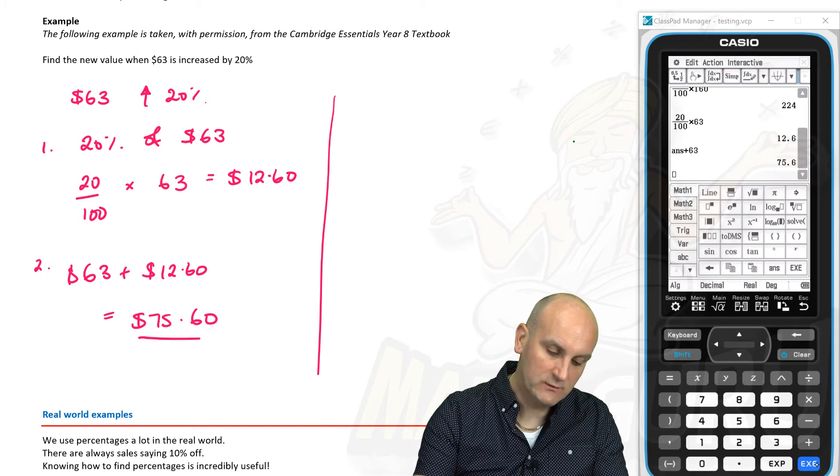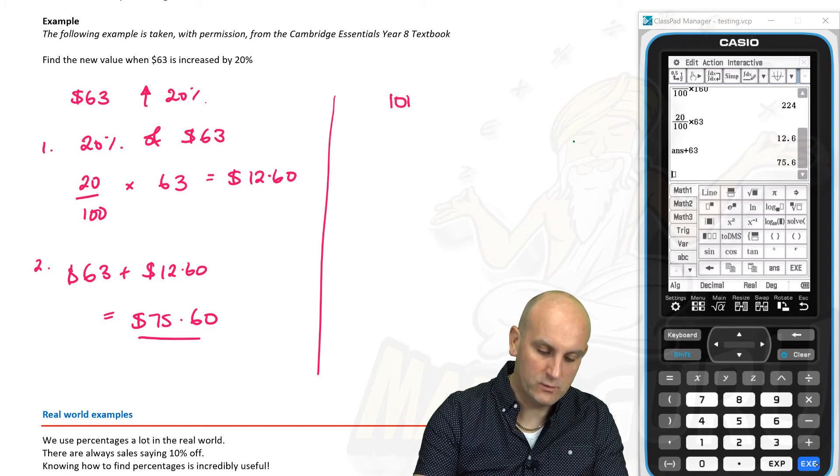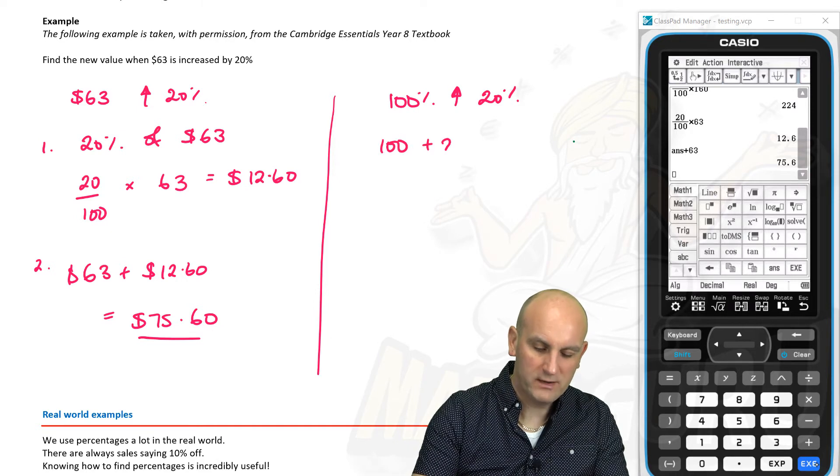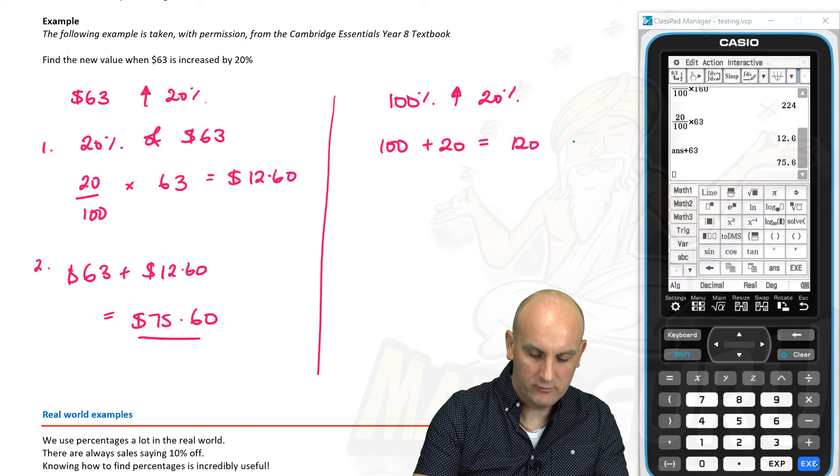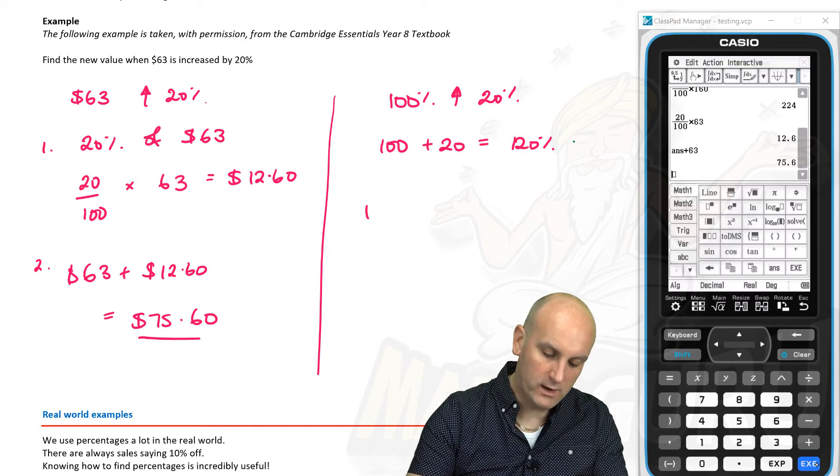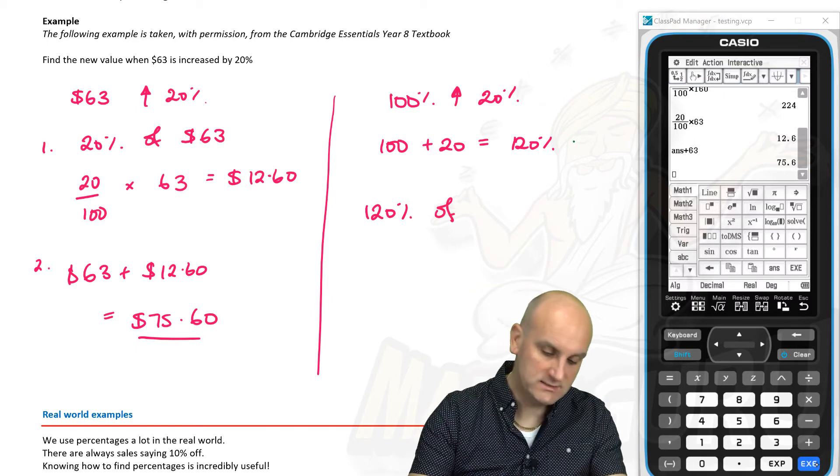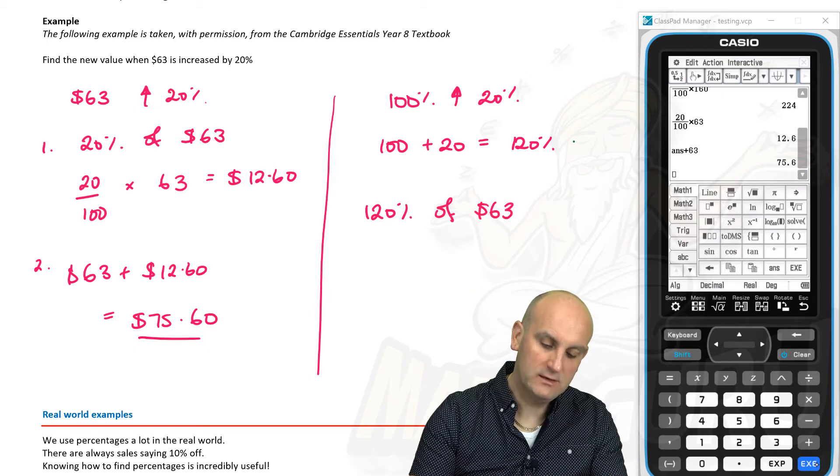The second way. So we've got $63. So we're starting with 100%. We're increasing by 20%. So I do 100 plus 20 is 120%. And then I want 120% of what I started with. Now, what did I start with?